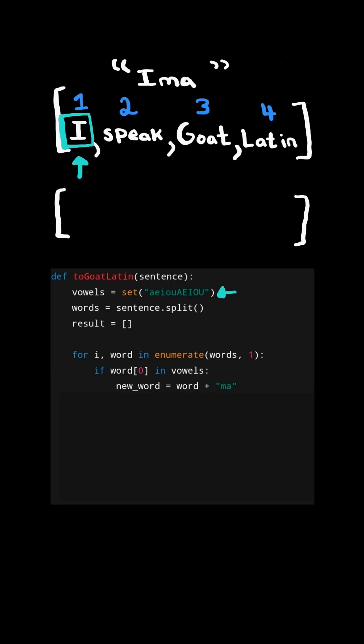So in this case, it'll be I-M-A. And then we take the string A and multiply it by the index we are on. And then we append that number of A's to the new word. And finally, we will append the new word to the list, and we continue to the next word.